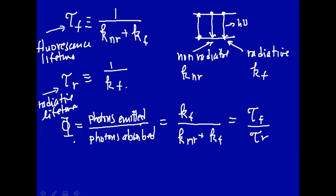There are other ways, besides the way we described, in which the quantum yield would come down. We said the rate constant for non-radiative decay increases, and that will lead to a decrease in both the fluorescence lifetime and also in the quantum yield.